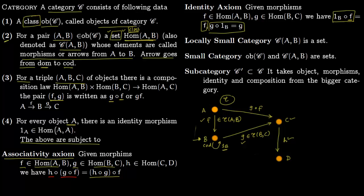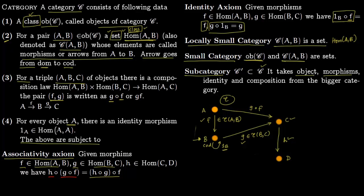We noted that Hom(A,B) is in general a class. In this set of lectures we focus on it being a set — if Hom(A,B) is a set for all pairs, we call it a locally small category. If in addition the objects also form a set rather than a proper class, we call it a small category. A subcategory C' of C has the same objects, morphisms that are a subset, and inherits identity and composition from C.